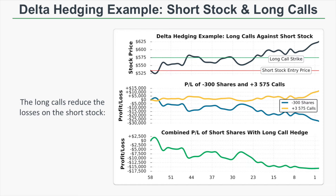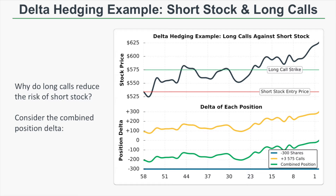By implementing the hedge, we effectively reduced the loss on the short shares by 50%. Looking at position deltas: the short stock position of 300 shares always has a position delta of negative 300. We purchased three call options with a beginning position delta of plus 90, bringing the combined position delta to negative 210. As the stock price increased, the delta of the calls increased as well, reaching a value of plus 300. So as the stock price was increasing, the call deltas were increasing too, making the calls a more and more effective hedge against the short shares.